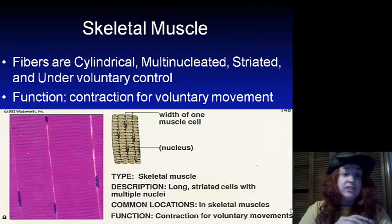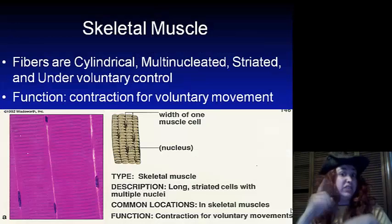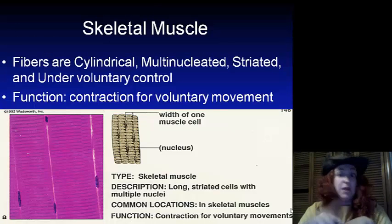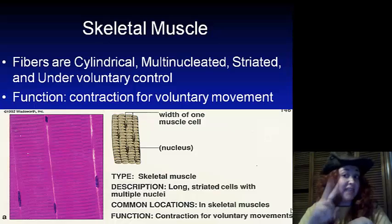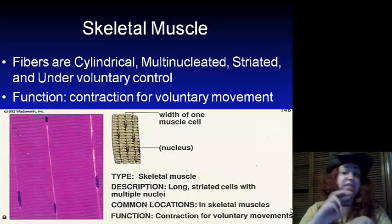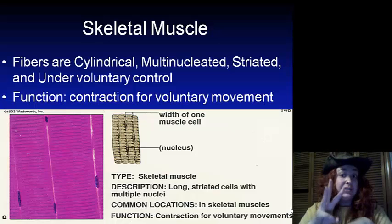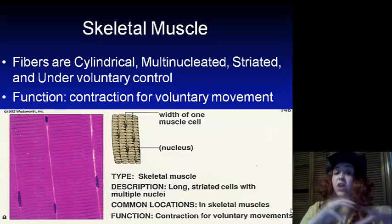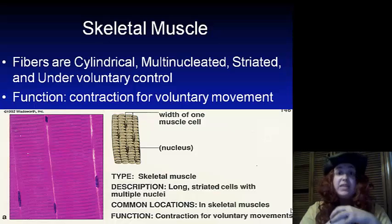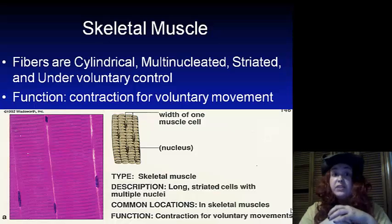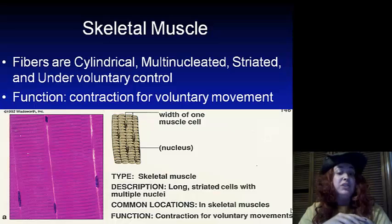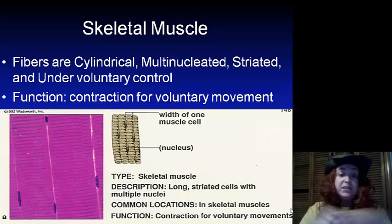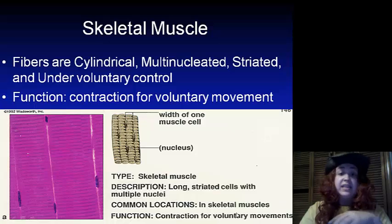Looking at skeletal muscles, we have fibers that are cylindrical and multinucleated, which means there are multiple nuclei inside of one cell. We see striation, which are line segments. It is under voluntary control, which means we can choose to move it. The function is to contract for voluntary movements, and these are located in our skeletal muscles.